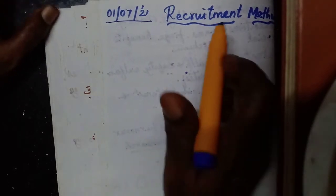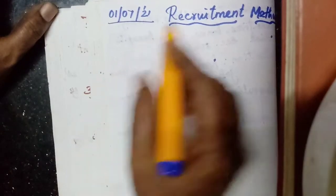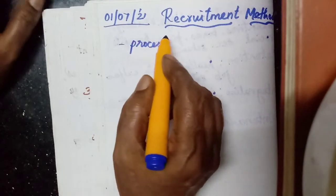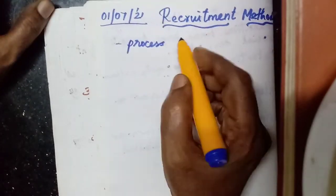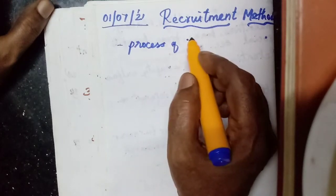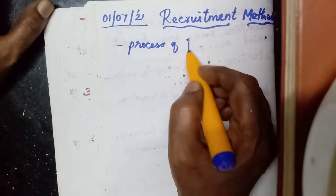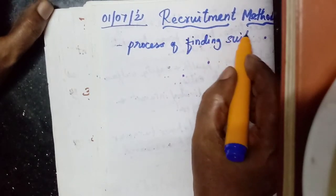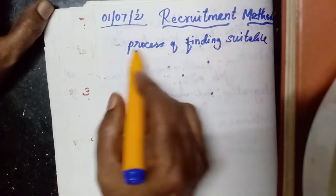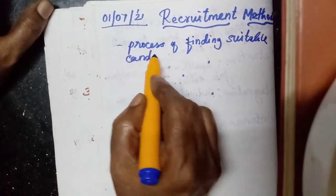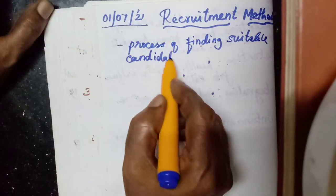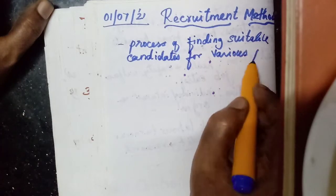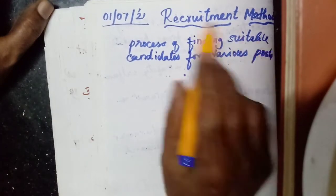So first we should know what is the meaning of recruitment. Recruitment is a continuous process of finding out suitable candidates — not any person — suitable candidates for the various posts in an organization. That is called recruitment.